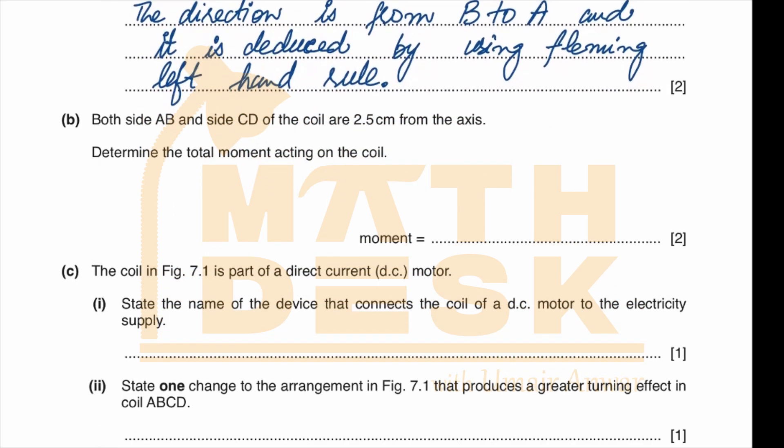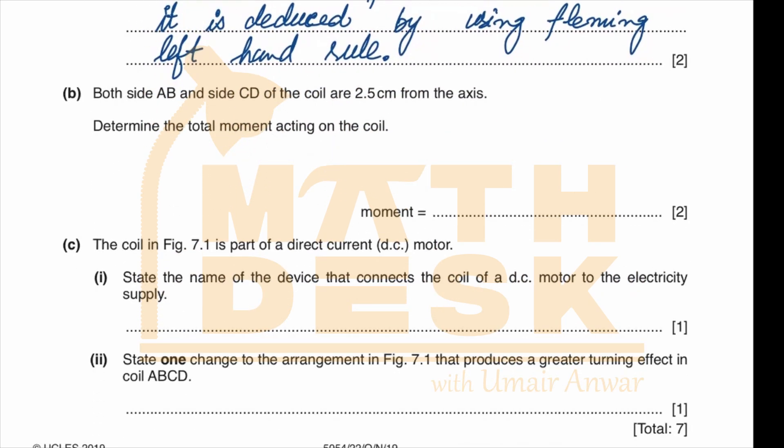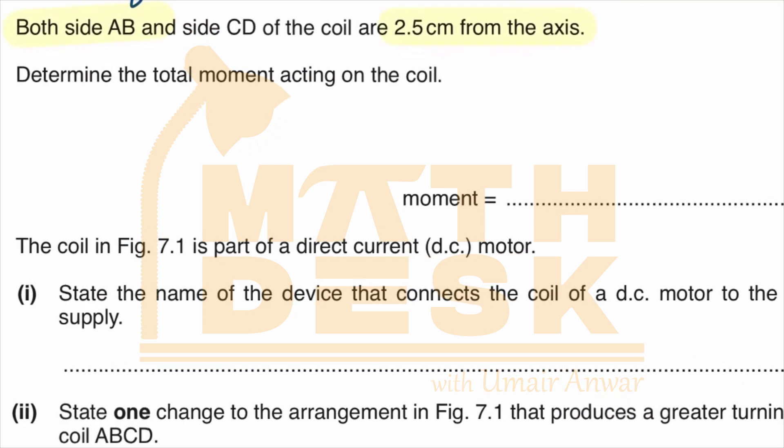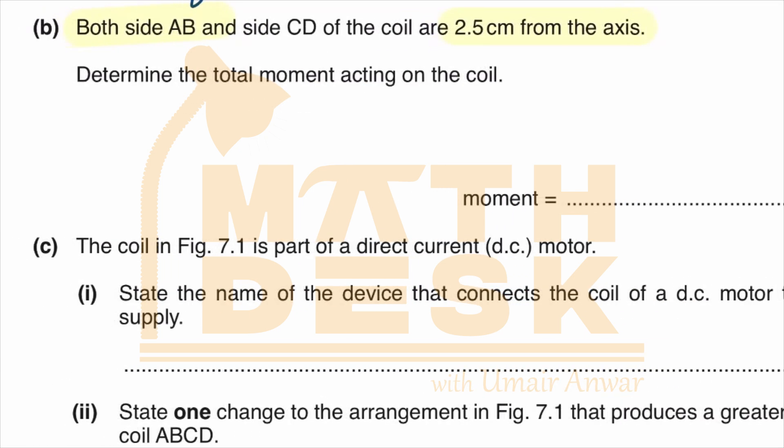Both side AB and side CD of the coil are 2.5 centimeters from the axis. Determine the total moment acting on the coil. For example, if we find the moment on side AB and then multiply it by 2, we get the total value of the moment.